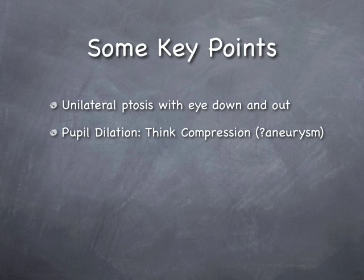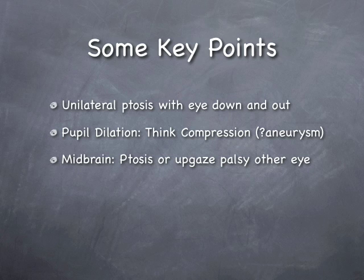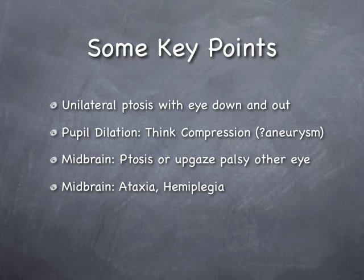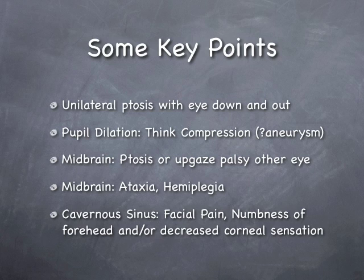A contralateral ptosis or upgaze palsy suggests a dorsal midbrain lesion. An ipsilateral ataxia or contralateral hemiparesis suggests rostral midbrain lesion, which should be checked by asking the patient to stretch out their arms. Check for facial paresthesia, corneal sensation and ask about burning facial pain or numbness to consider cavernous sinus lesions.